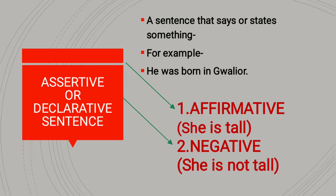The first type of sentence is assertive or declarative sentence — a sentence that just says or states something. When we simply deliver words that have a sense, that type of sentence is a declarative or assertive sentence. For example, 'I am a boy.' In this sentence, I am not asking a question, giving an order, making a request, suggesting, or showing any emotion. Assertive sentences are also of two types: affirmative and negative. Affirmative: 'she is tall.' Negative: 'she is not tall.'